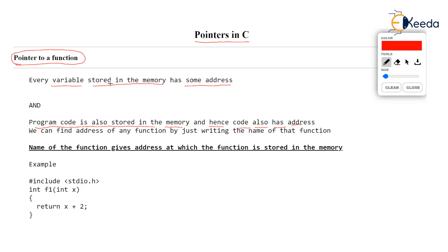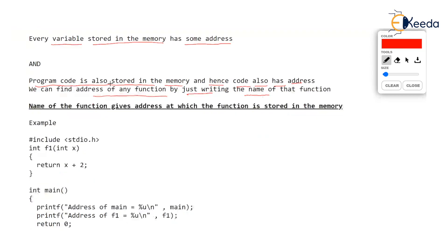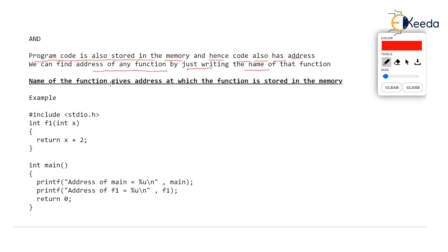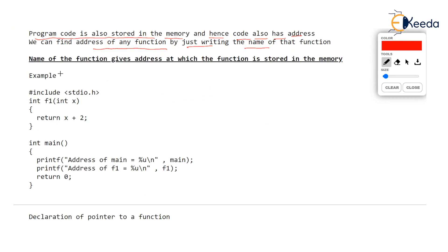Remember, main is also a function. So you can find address of any function by just writing the name of the function. Suppose you will always write a function in your program called int main — that's from where the program starts. Now this main is a function and obviously this main is stored in the memory. In fact, this entire code is stored in the memory.